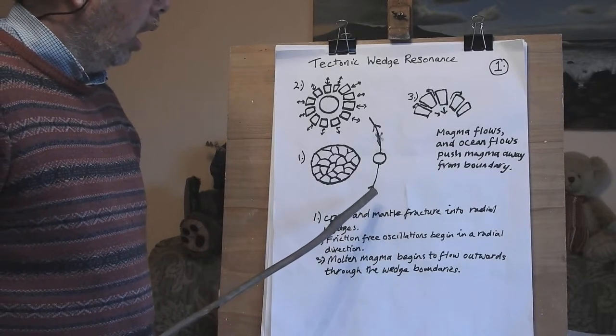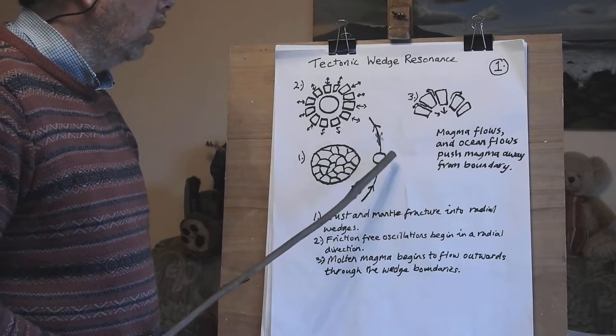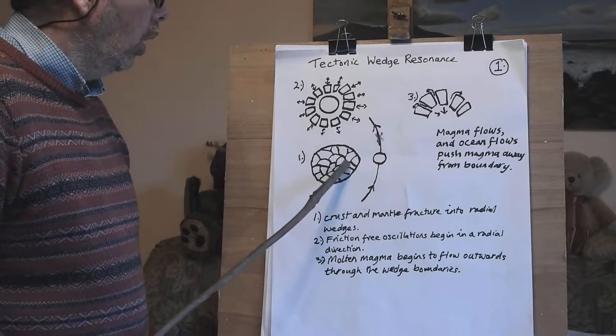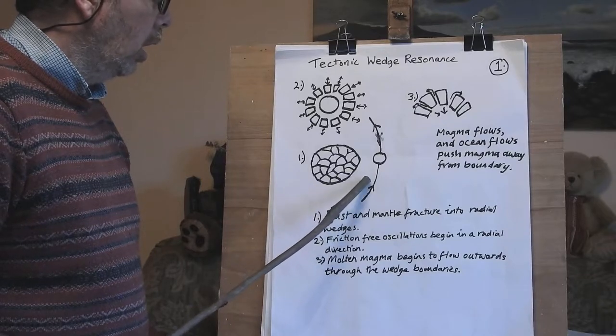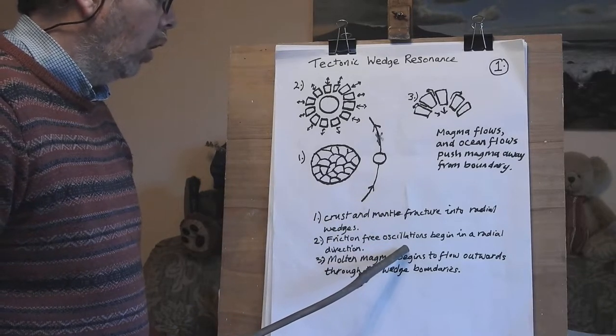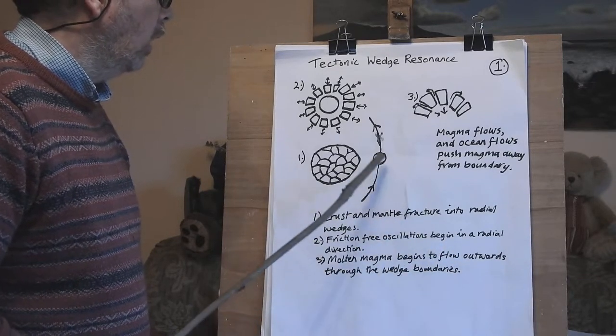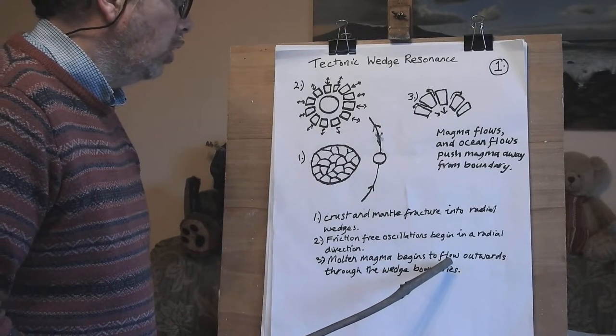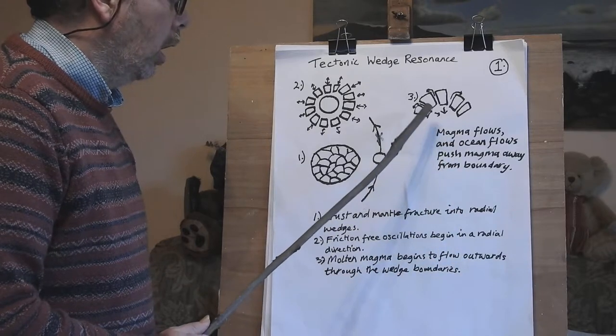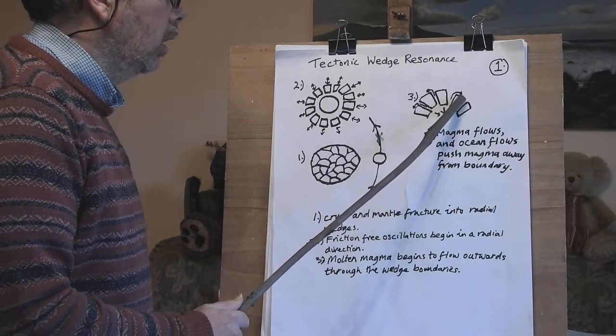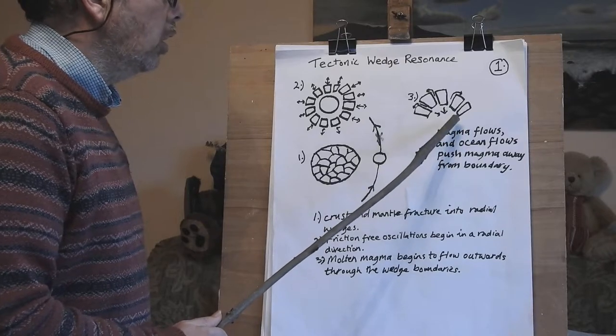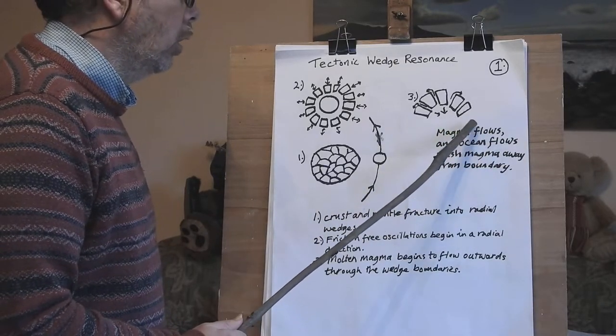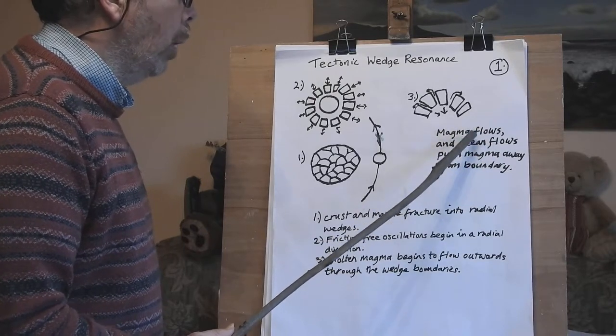We have a comet moon passing by close to the Earth. The Earth fractures into radial wedges. Friction free oscillations begin in a radial direction like here. Molten magma begins to flow outwards through the wedge boundaries creating the mid-ocean ridges. The magma flows and the ocean flows over the top of it pushing the magma away from the boundary.